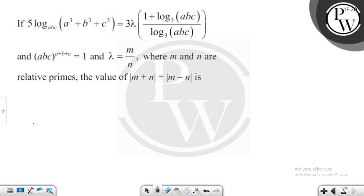Hello, let us see this question. The question says that if 5 log base abc of (a³ + b³ + c³) equals 3λ times (1 + log₃(abc)) divided by log₃(abc).